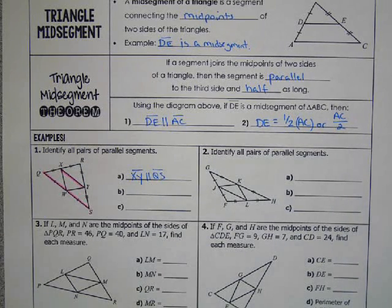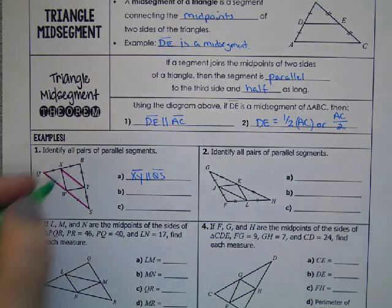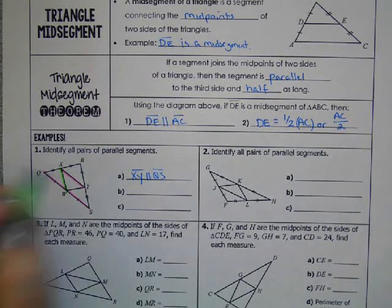And then we can use a different midsegment. If we did XW, that would be parallel to RS.